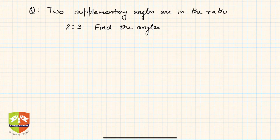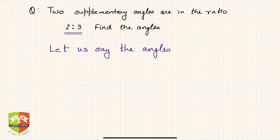Okay, so more questions to solve. Now in this question, two supplementary angles are in the ratio 2 is to 3, find the angles. So you have to find the angles which are supplementary and the ratio is 2 is to 3. How to do it?